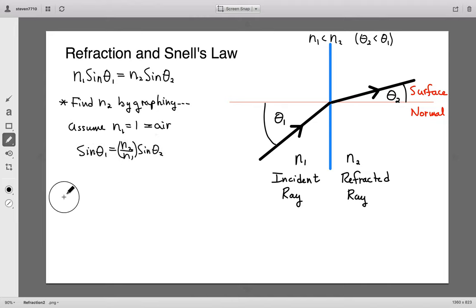So we're going to graph sine theta one on the vertical axis, the y-axis. So that'll be our y value. And we'll have sine of theta two on the horizontal axis, or our x-axis. And so if I do that, then what I'll get is a line with slope equal to N2 over N1.